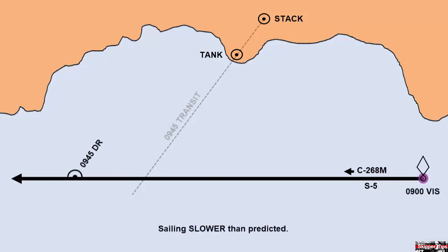Transits which cross our track line at a steep angle can be used to show the advance of our vessel along a track. We departed the buoy at 0900 and sailed for 45 minutes. At 0945 we found two charted objects in line which cross our track line at a steep angle. Now we can measure between our 0900 and 0945 position to find our actual sailing speed over ground.